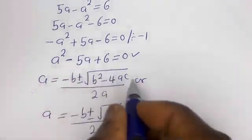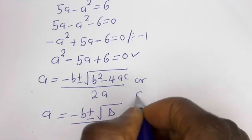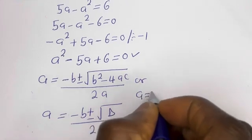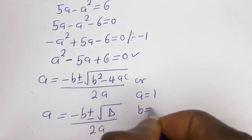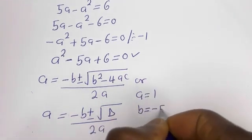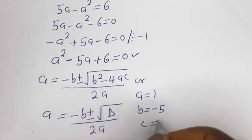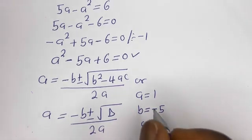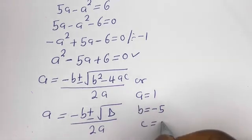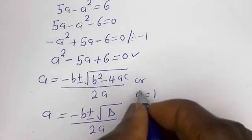From this equation, the coefficients are: a is equal to 1, b is equal to minus 5, and c is equal to 6.